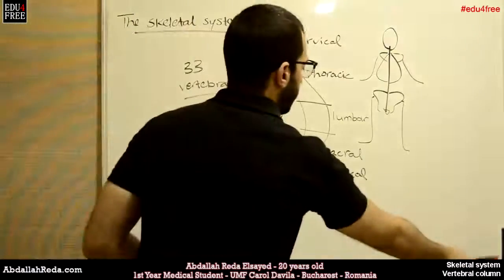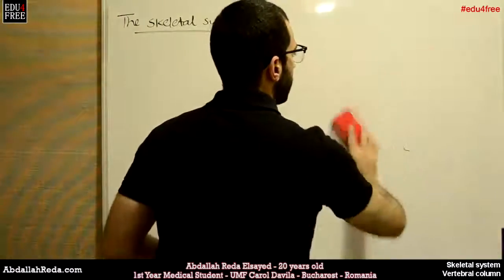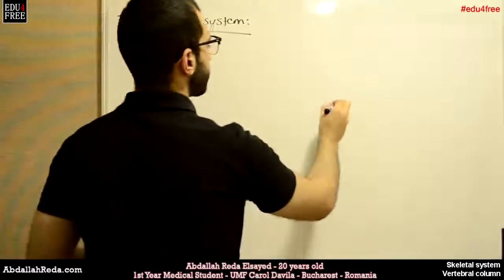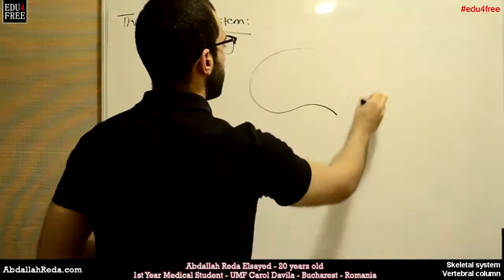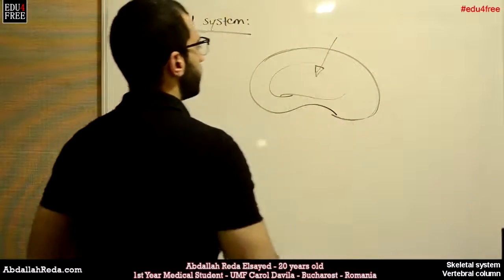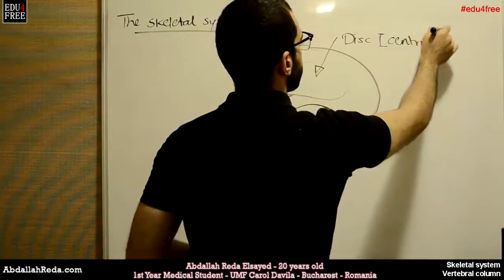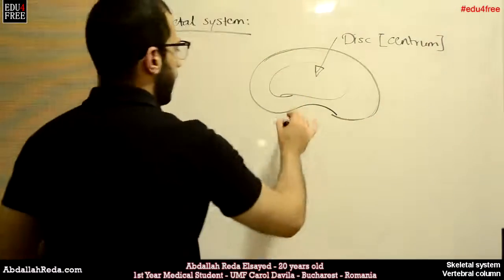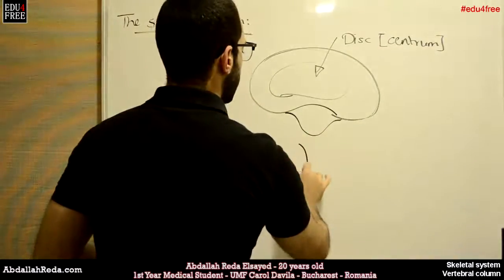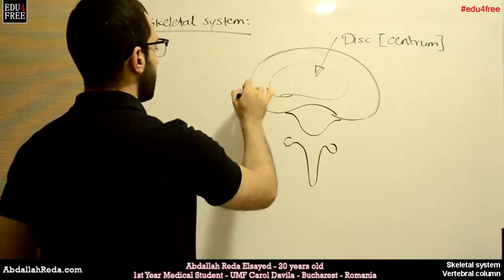Now we will have a general view of a thoracic vertebra. First, we have a disc, also called the centrum. Here we have a canal, which is formed by an opening between the spine and the processes.